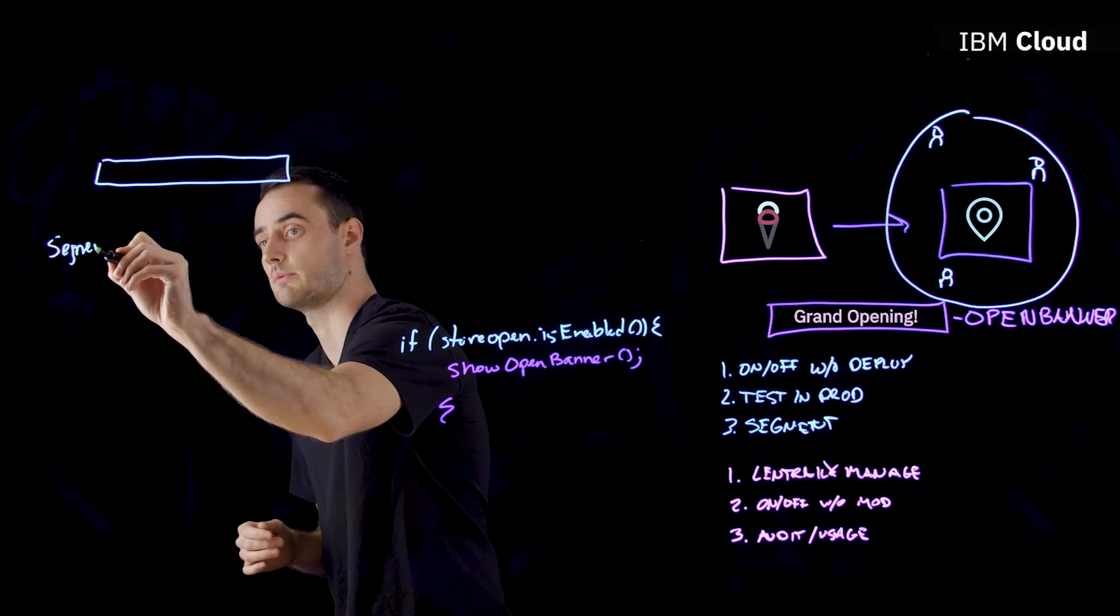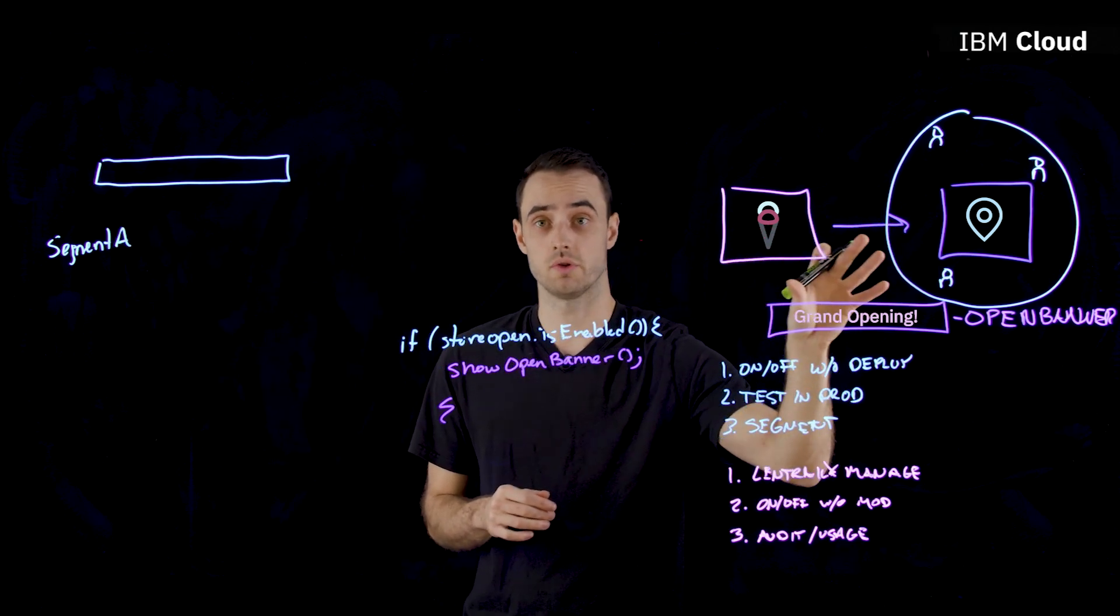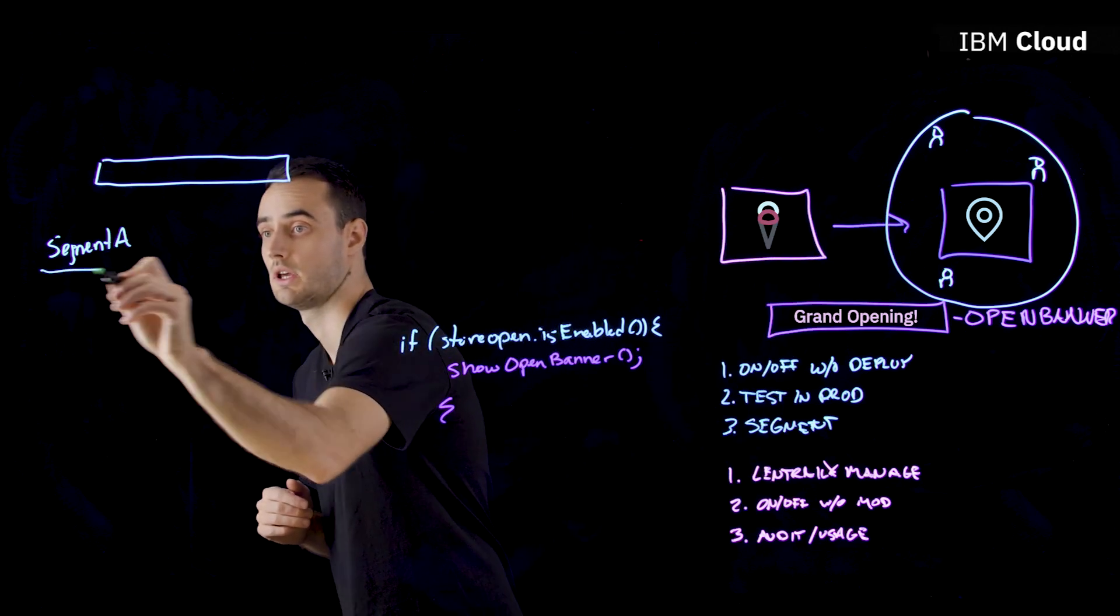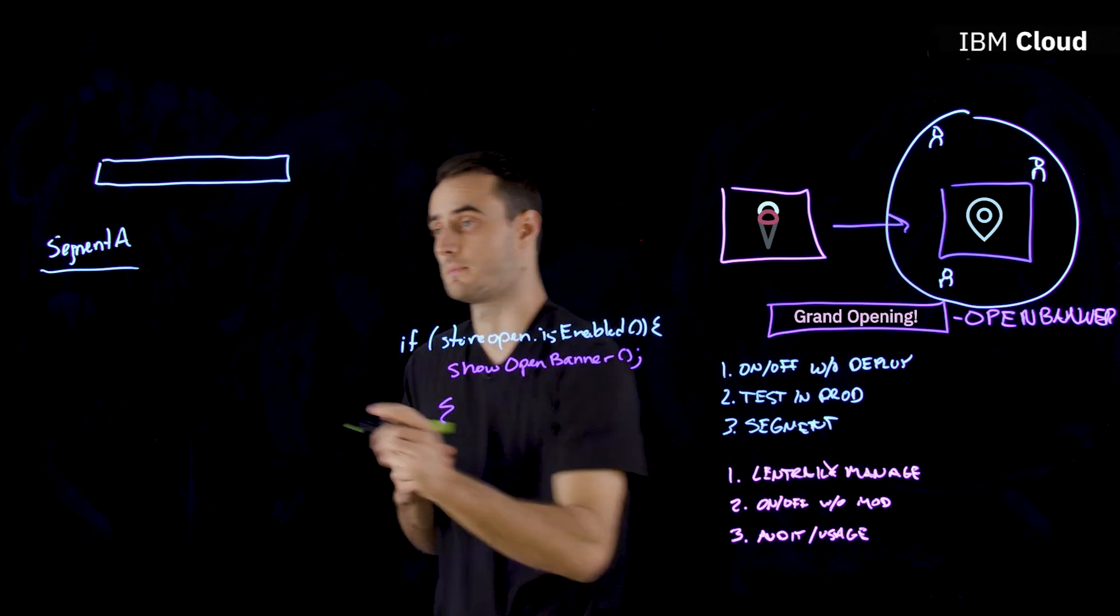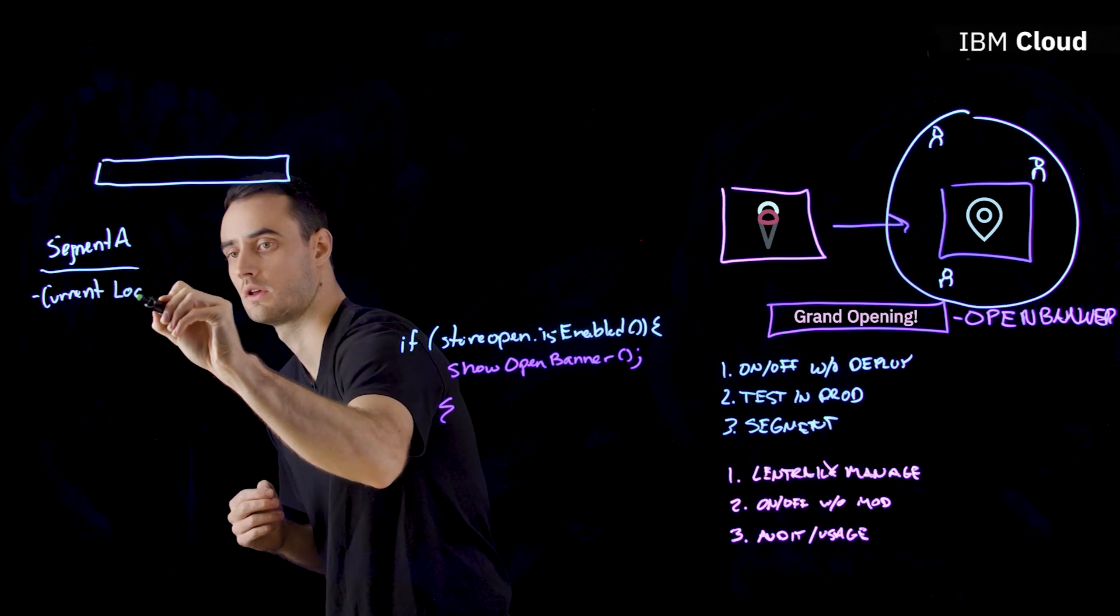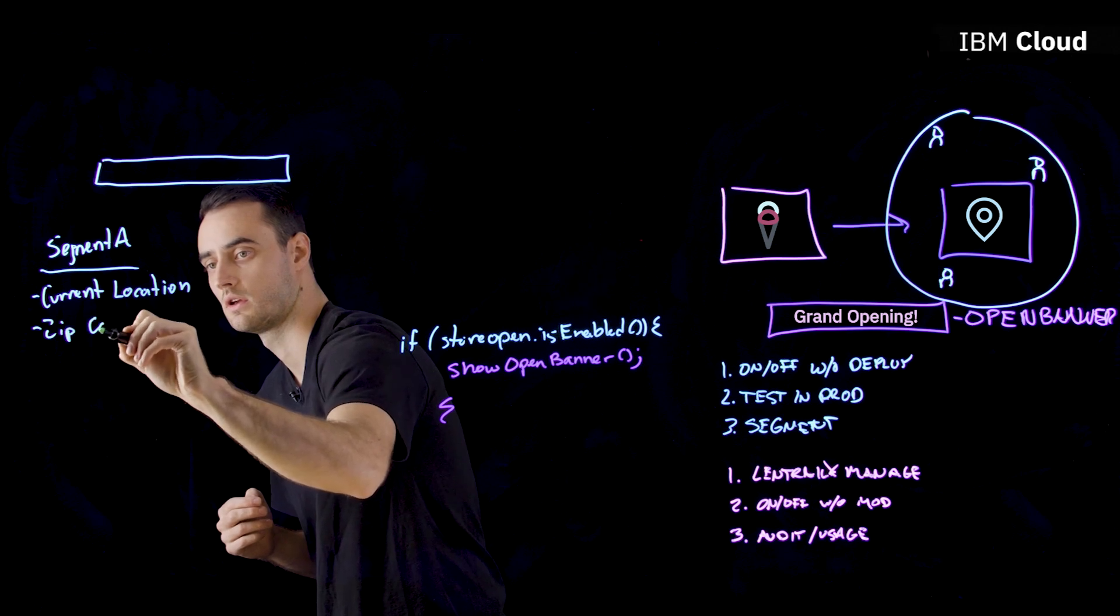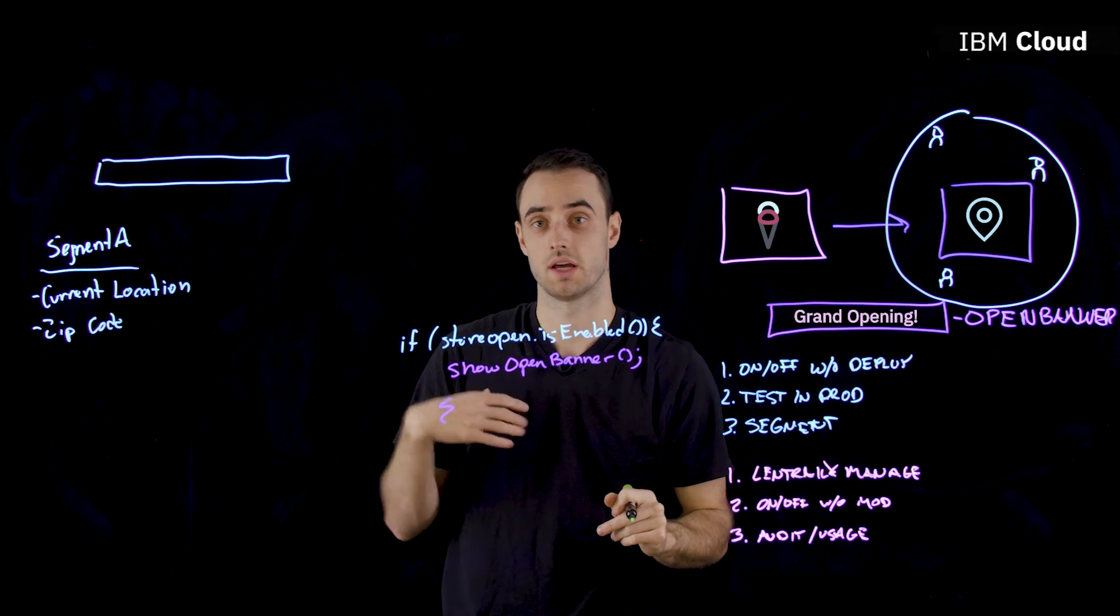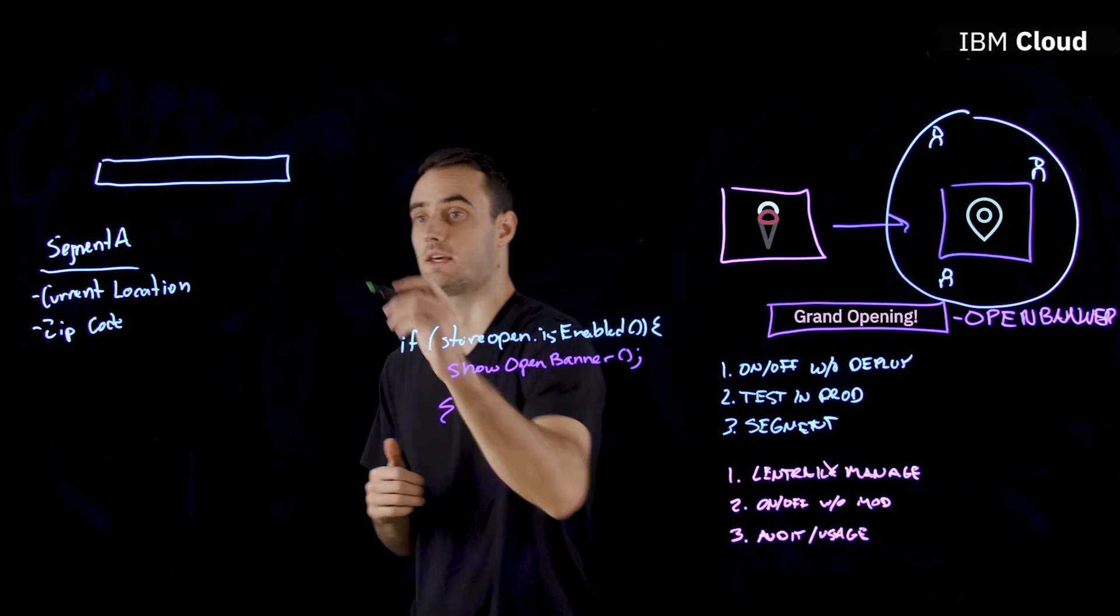Now we want to introduce the idea of segments. So we've already said that we only want a certain number of people to view this, people who are nearby our new shop. This will be our segment A. And a segment is simply users or groups of users that have attributes tied to them. So this first one might have current location and zip code attributes. This allows users who are either currently in the location or have already stipulated that they live nearby to view this feature.